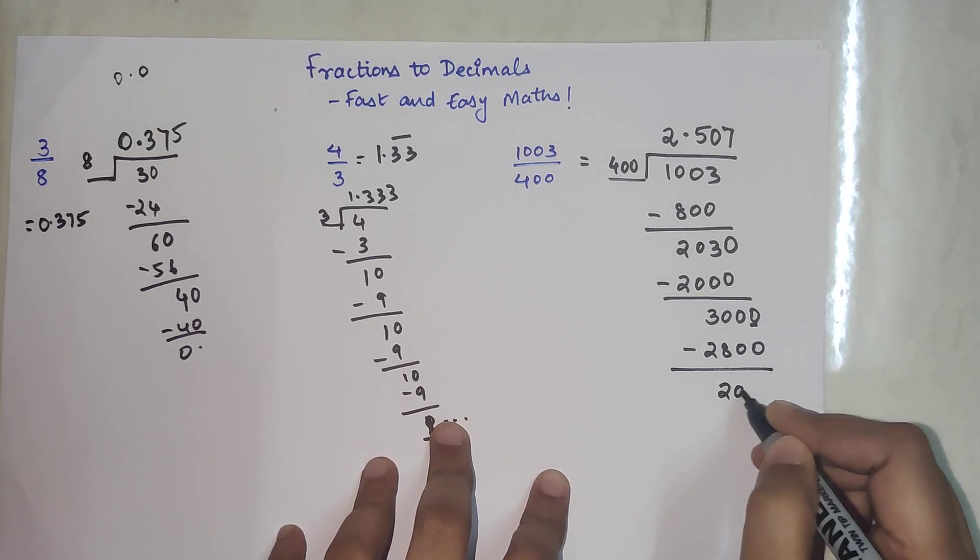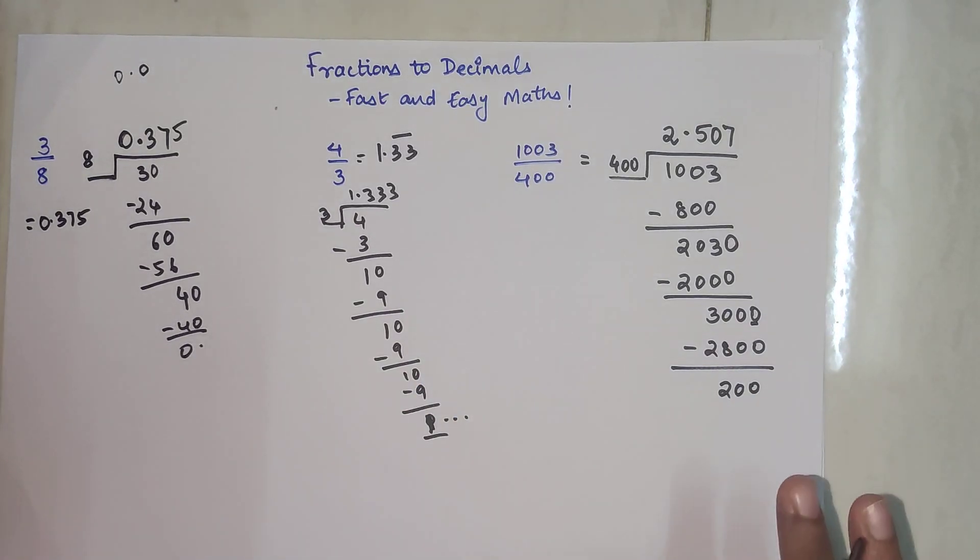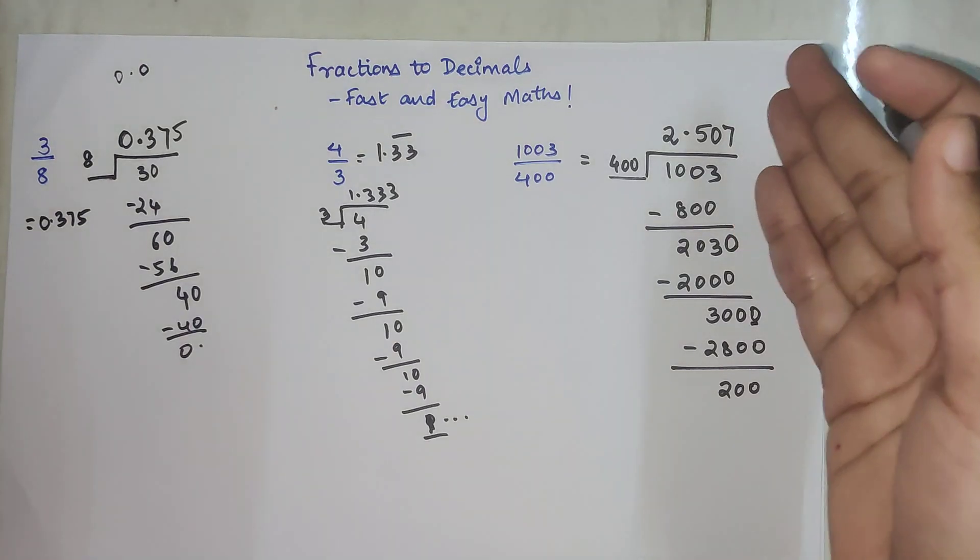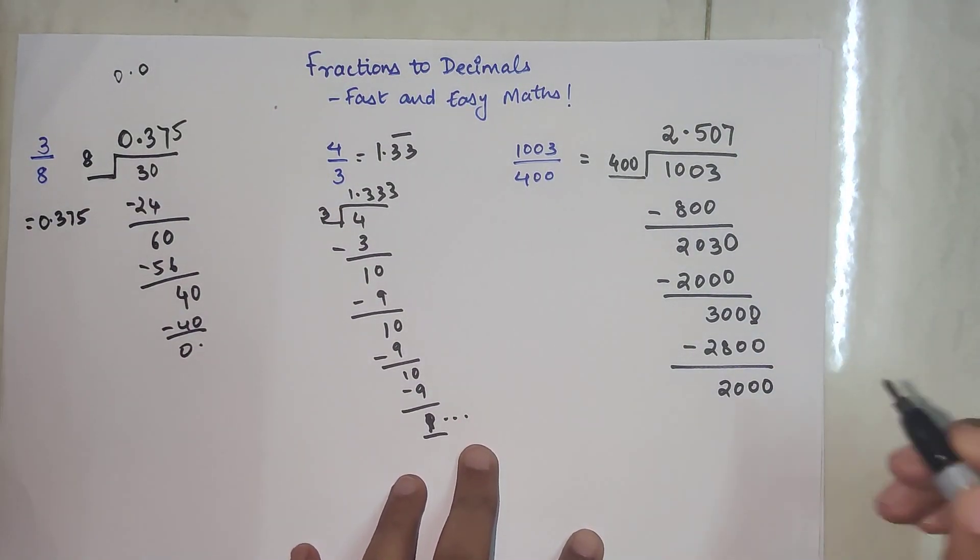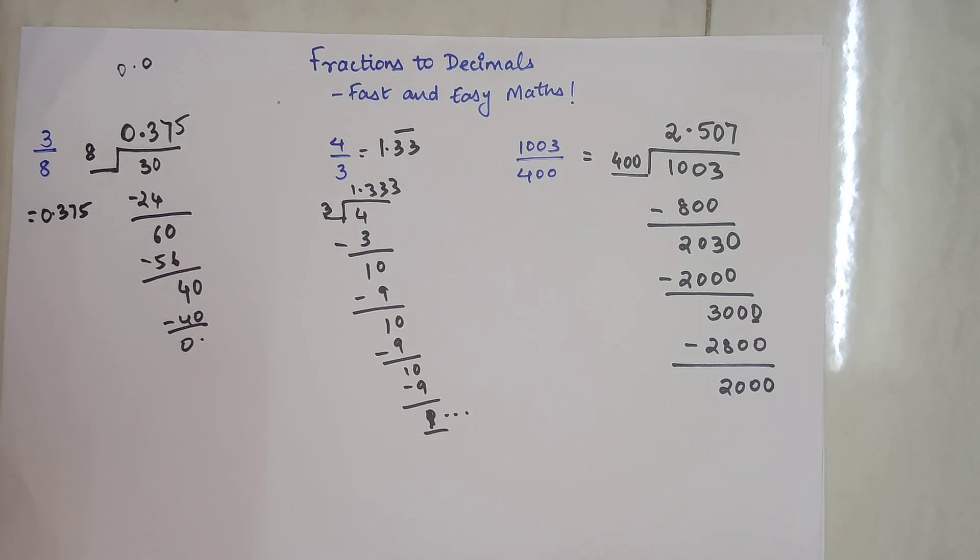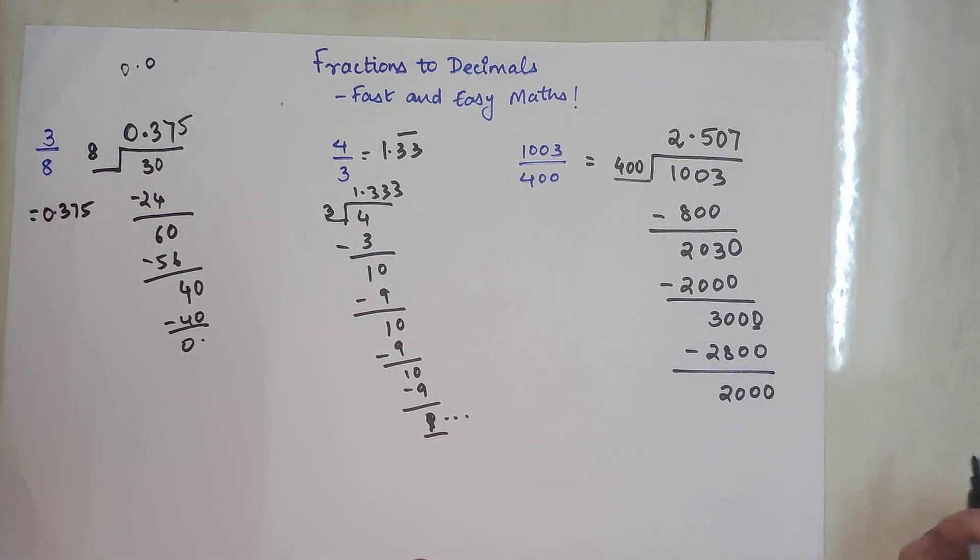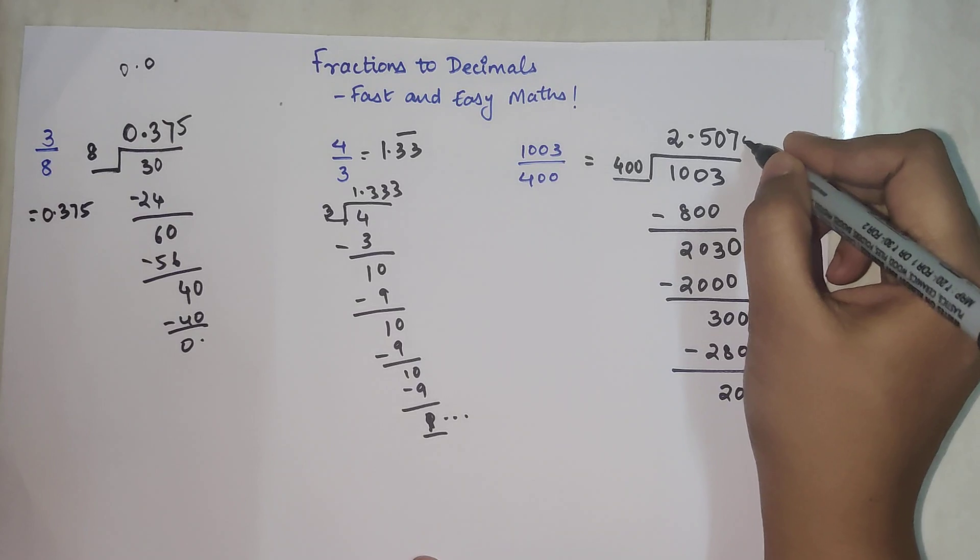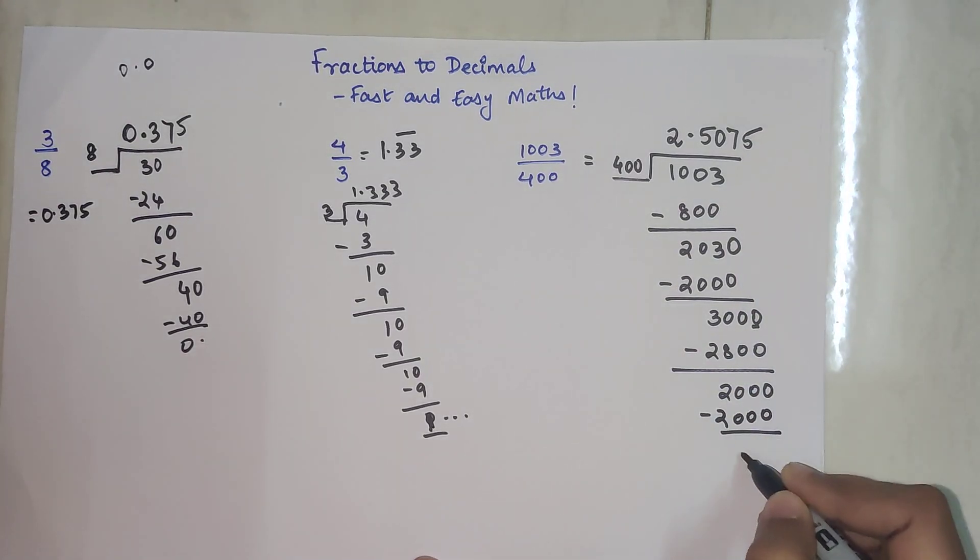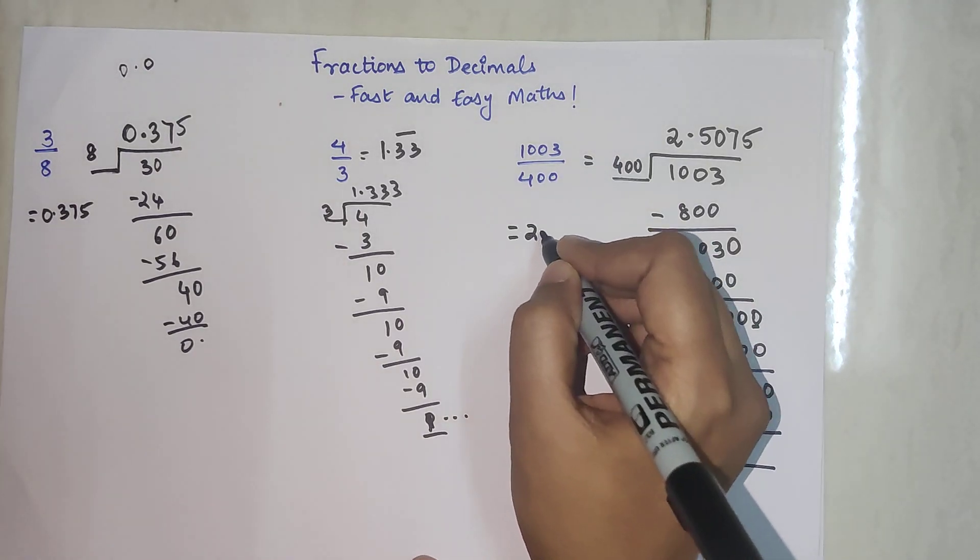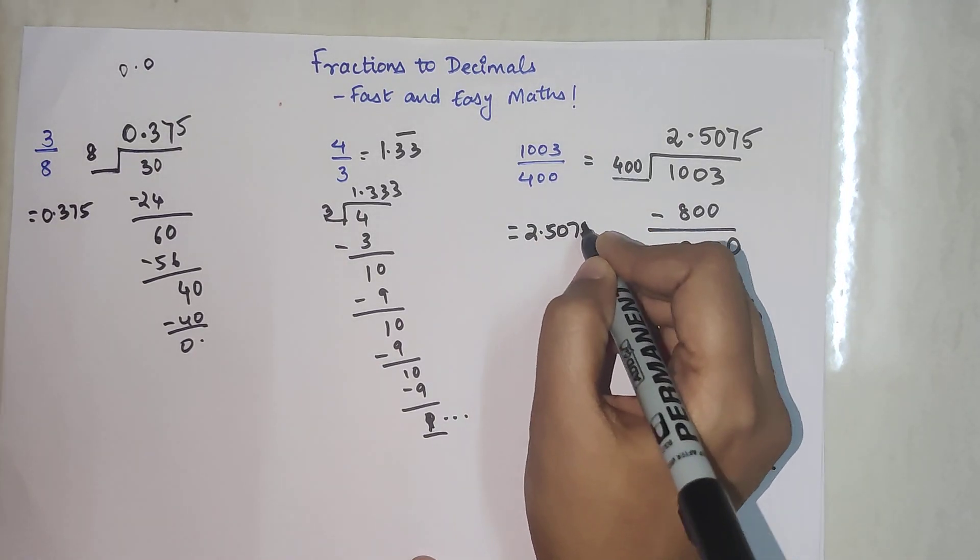So now 400 into 7 gets you 2800. Subtracted, you get 200. Now you might be wondering, should I add a 0 and if I'm adding a 0, should I put it in the quotient or not? No. You don't have to put it in the quotient because you still have the liberty of taking 1 0 because of the decimal point. So now 400 into 5 gets you 2000.